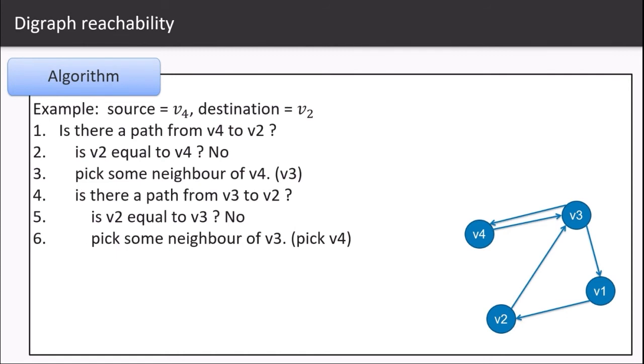Pick some neighbor of v3. In this case we have two neighbors, v4 and v3. We randomly pick v4. Is there a path from v4 to v2? Note that we have repeated step 1 here, so we will end up revisiting v4 without ever finding a solution.